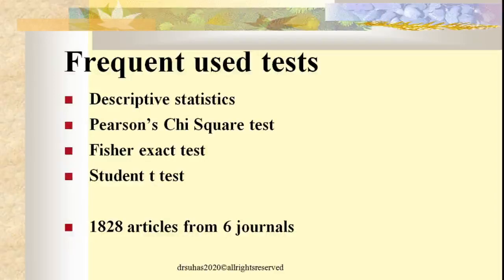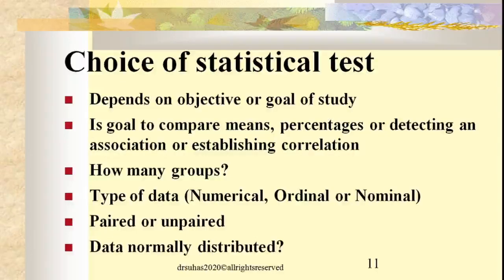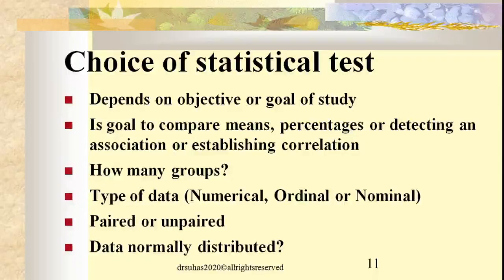There is an admixture of both descriptive and inferential statistics in various research, and the selection depends on the research question and type of study. The choice of statistical test depends on several important factors. The most important is the objective or goal of the study — whether it is observational, retrospective, prospective, correlational, or regression. For example, for a case-control study, we do not select t-test or ANOVA; instead we calculate odds ratios.